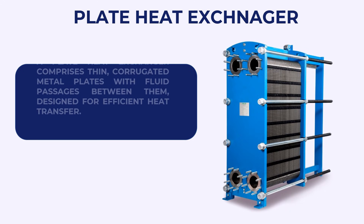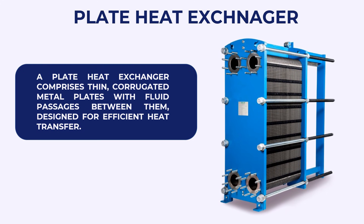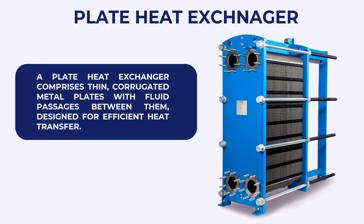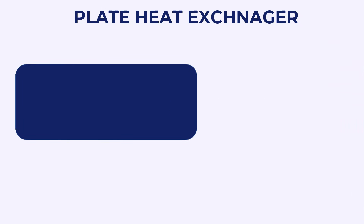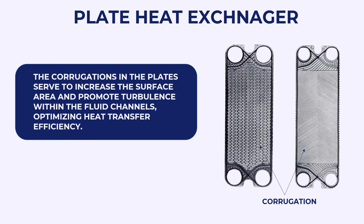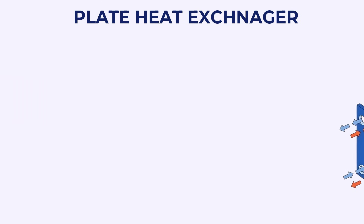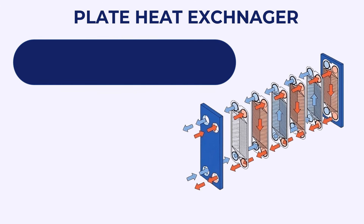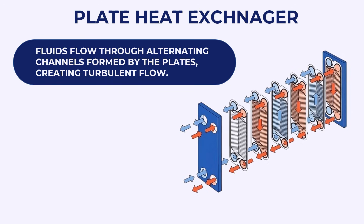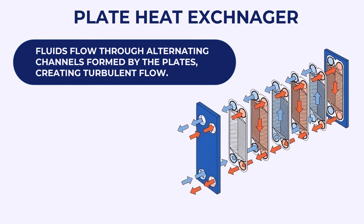Plate Heat Exchanger. A plate heat exchanger comprises thin, corrugated metal plates with fluid passages between them, designed for efficient heat transfer. The corrugations in the plates serve to increase the surface area and promote turbulence within the fluid channels, optimizing heat transfer efficiency. Fluids flow through alternating channels formed by the plates, thus creating turbulent flow.